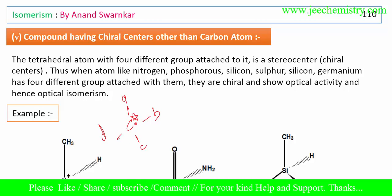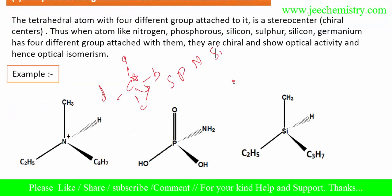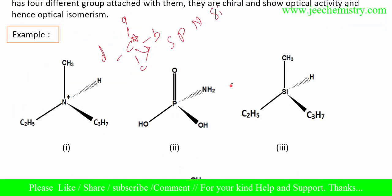But other than carbon atoms is also possible. Sulfur, phosphorus, nitrogen, silicon - these types of atoms, if present, can also show a chiral center. Now this nitrogen having four different groups attached to it can show chirality.